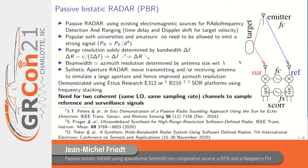Passive radar is based on the idea of using existing radio frequency emitters, under the assumption that we are not aware of what this emitter is transmitting. We need two channels for recording: a reference channel for recording the emitter signal, and a surveillance channel that will detect any time-delayed or Doppler-shifted signal from this emitter. This kind of passive bi-static radar is quite popular with university or amateur radar enthusiasts.